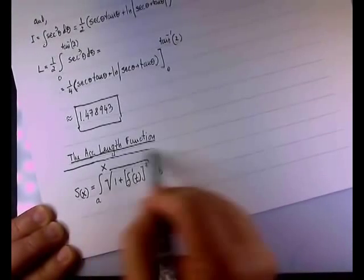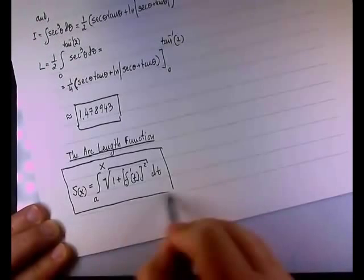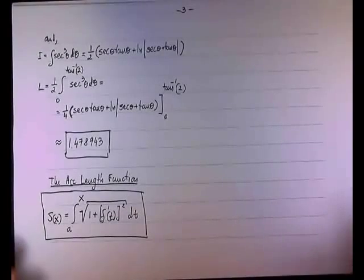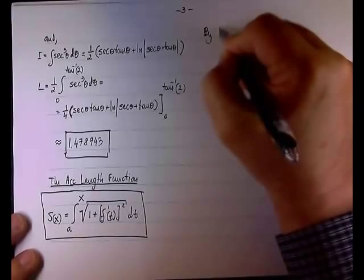So the variable of integration would be dt. So this is the theorem for the arc length is a function. And now, just a little bit of integration here. If you recall FTC1.